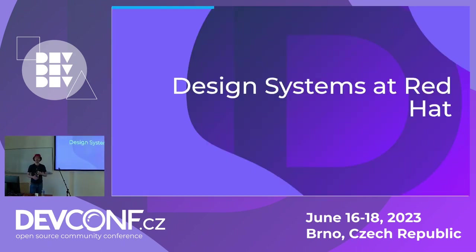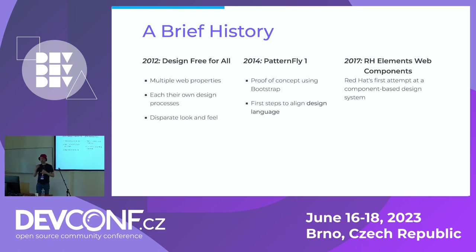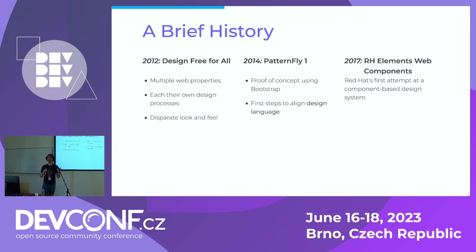So that brings us to design systems at Red Hat. Let's have a brief overview of the history of how design systems came to be at Red Hat and some of the problems we faced. Back in 2012, there was really a design free-for-all. We had multiple different projects and properties, each with their own designers, design teams, design philosophies, and design languages — nothing was consistent from a design or technical perspective. That's why in 2014, the first version of the Patternfly library was developed — a proof of concept built using Bootstrap, the first step at Red Hat to aligning on a design system. The name Patternfly was chosen as a non-corporate, community-friendly name.